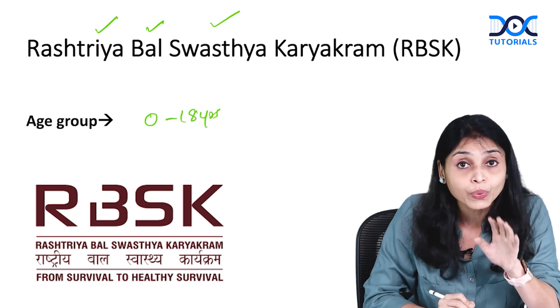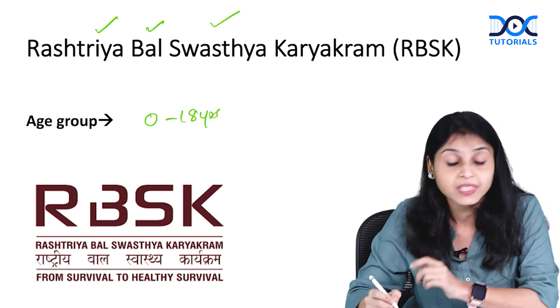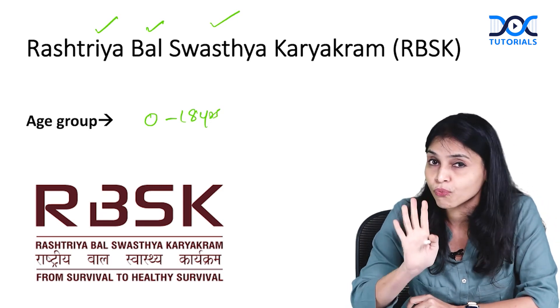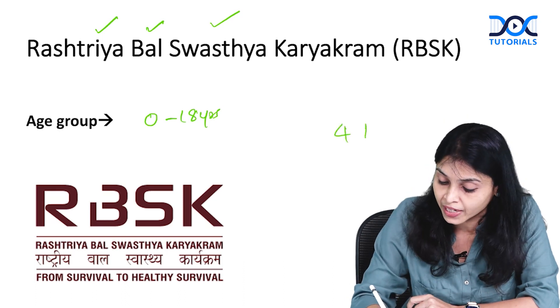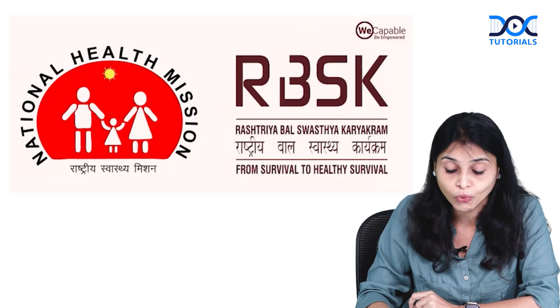So what we do here is all children between this age group are screened for 4 Ds which are prevalent in children. Now which are those 4 Ds?